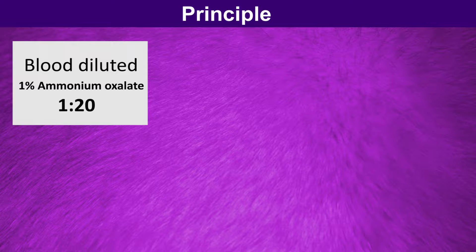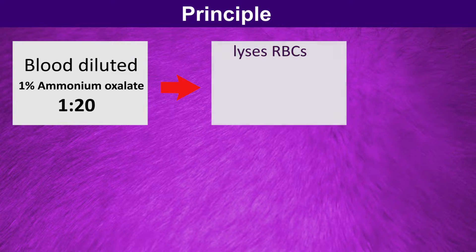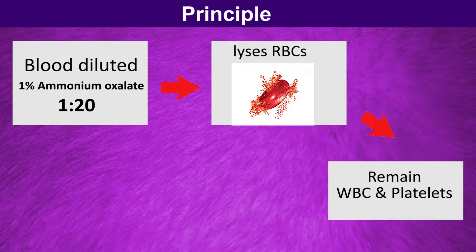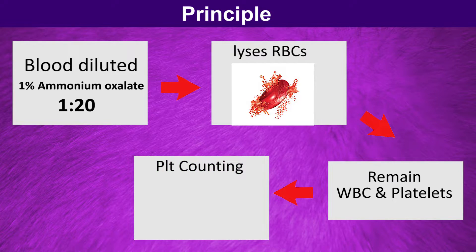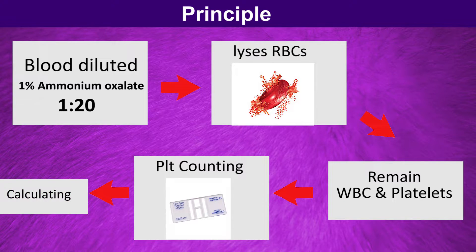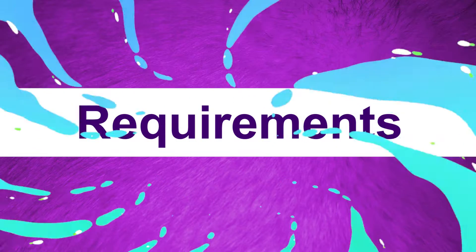The principle: blood is diluted in a filtered solution of 1% ammonium oxalate at a ratio of 1 to 20. This lyses red blood cells and leaves white blood cells and platelets. Platelets are then counted microscopically using an improved Neubauer counting chamber, and the number of platelets per liter of blood is calculated.